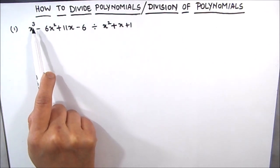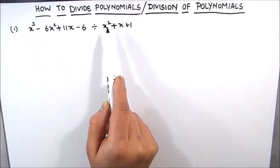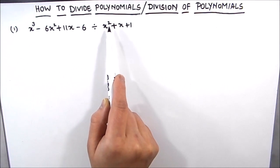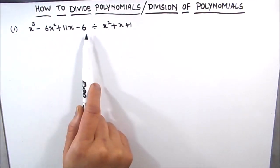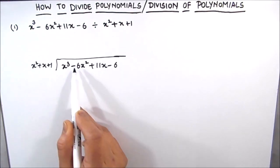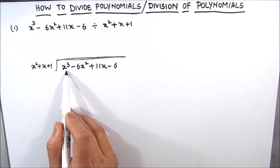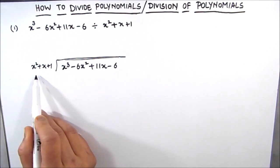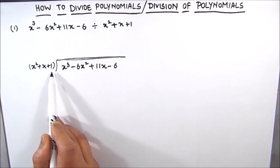Here we have degrees 3, 2, 1. Similarly for the second polynomial it is 2, 1. So we have to first arrange the polynomial in decreasing order of their degrees. The second step is to divide the first term — which is x cubed here in this case — of the dividend by the divisor.